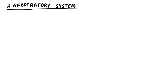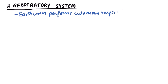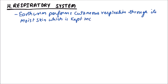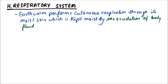In this video we are going to discuss the respiratory system of earthworm. Earthworm performs cutaneous respiration through its moist skin, which is kept moist by the exudation of body fluid occurring through the dorsal pores.